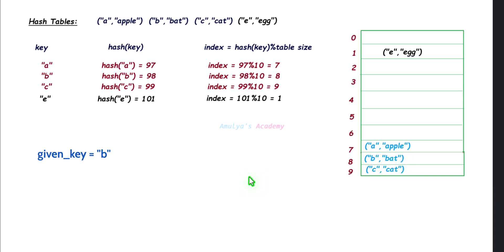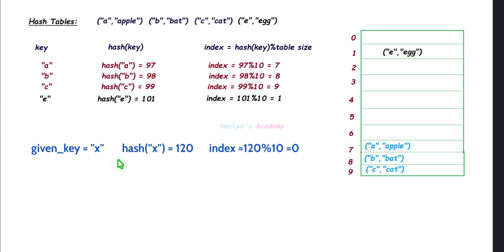So we will get the output as 'bad.' If the key is not found — for example, taking key X — I will find its index, go to that index, and check whether that slot is empty or not. Yes, the slot is empty, so it will return the message 'key is not found in the hash table.'